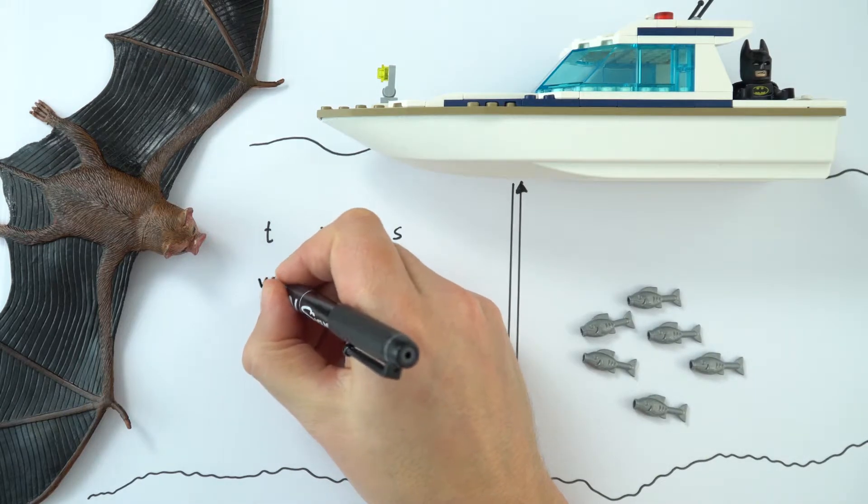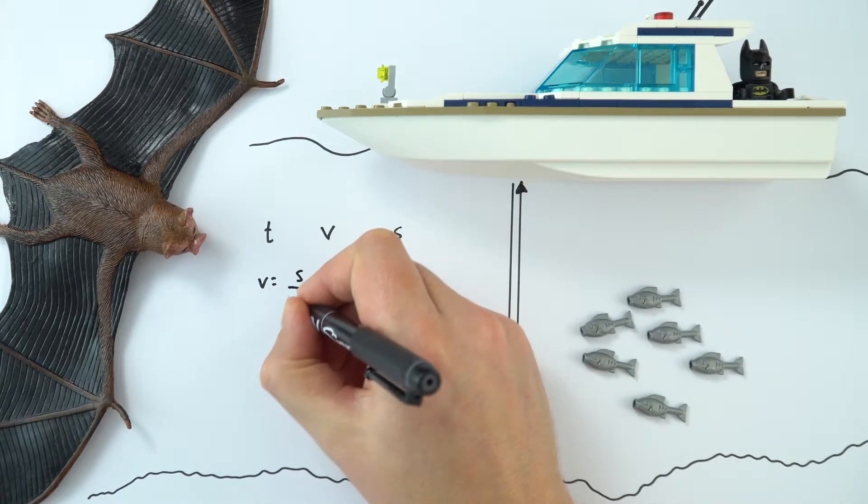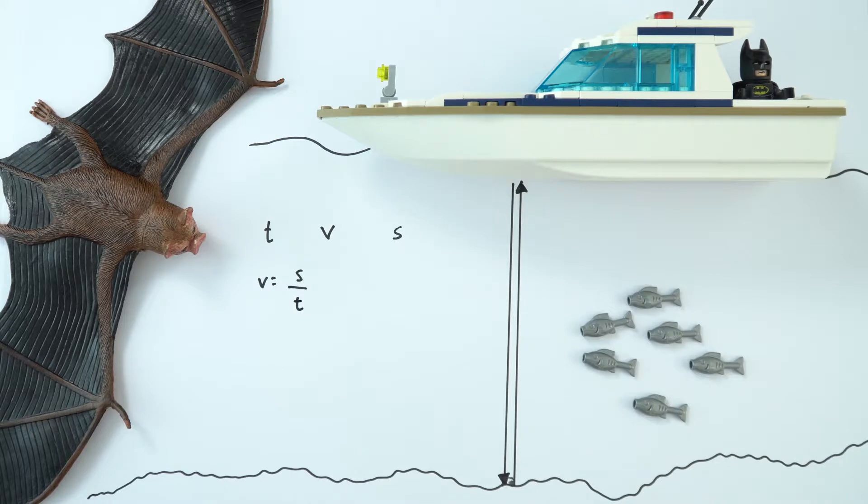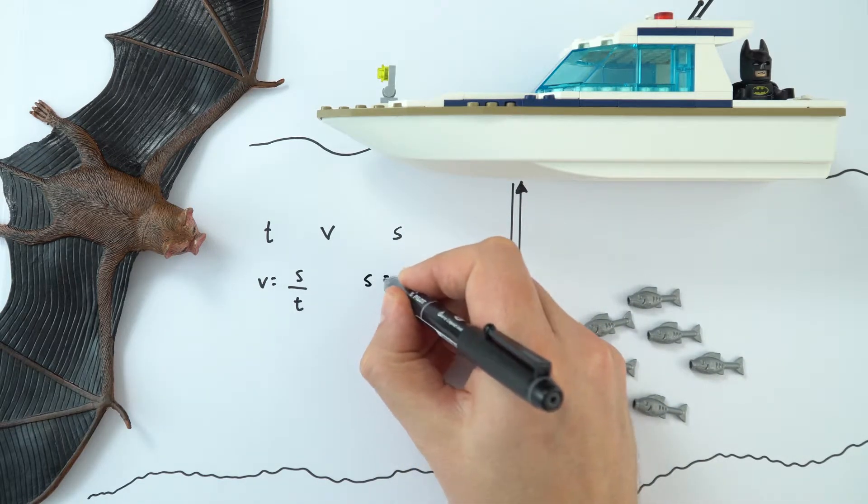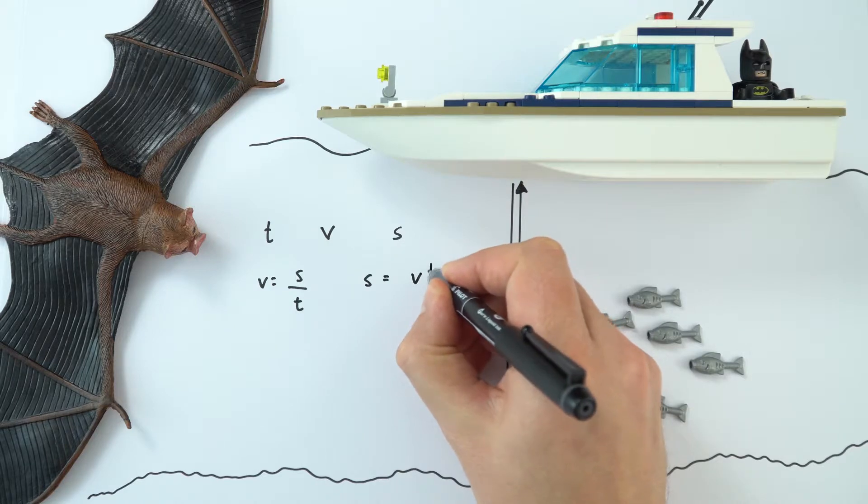Now here's the thing, we know that speed is equal to the displacement divided by the time, and therefore we can say that the displacement is equal to the speed times time.